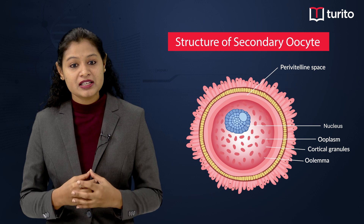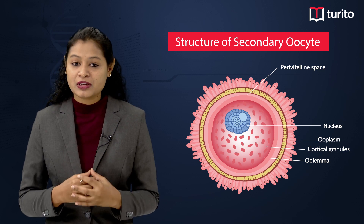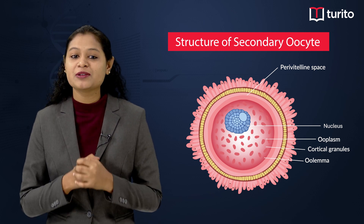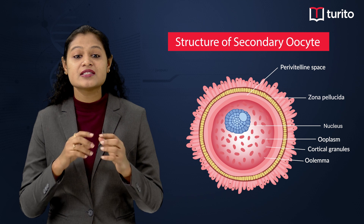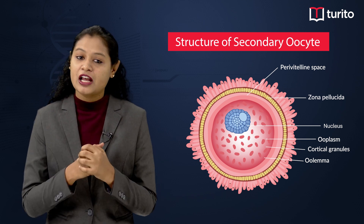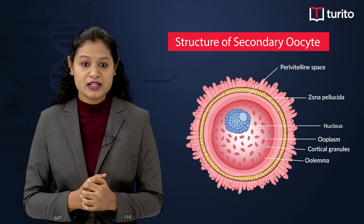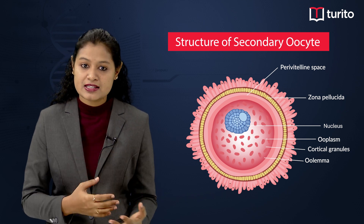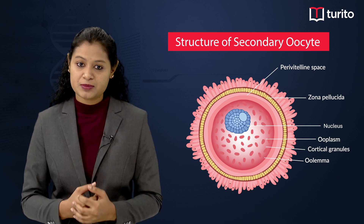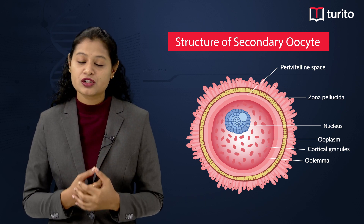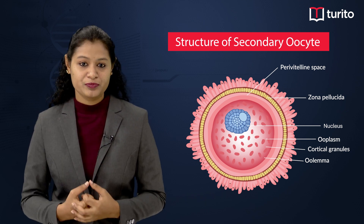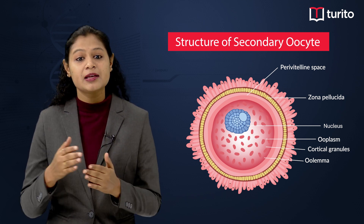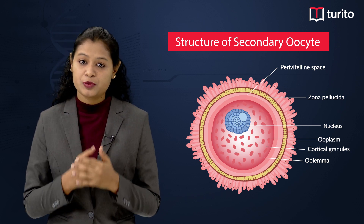After the perivitelline membrane, we have another acellular membrane called the zona pellucida. This zona pellucida has receptors like the ZP3 receptors, which help in the attraction of the sperm, and it remains intact till the implantation process.